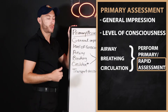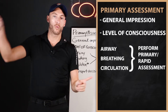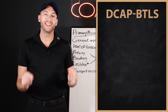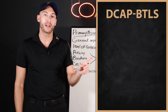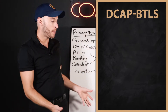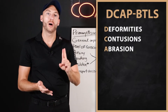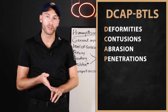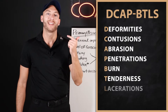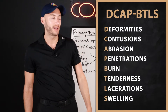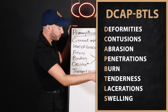When talking about trauma rapid assessment, our first mnemonic is D-CAP-B-T-L-S. This mnemonic will help you when you're scanning your patient. What you're looking for is any deformities, contusions, abrasions, punctures — moving on to BTLS — burns, tenderness, lacerations, swelling. You're looking for anything like that when doing a physical exam.